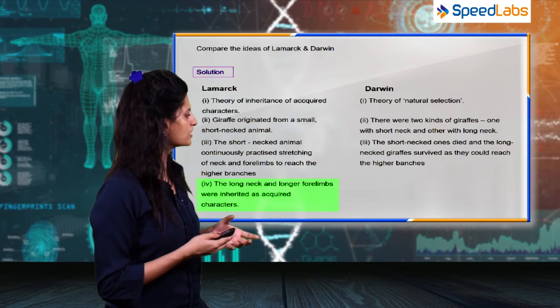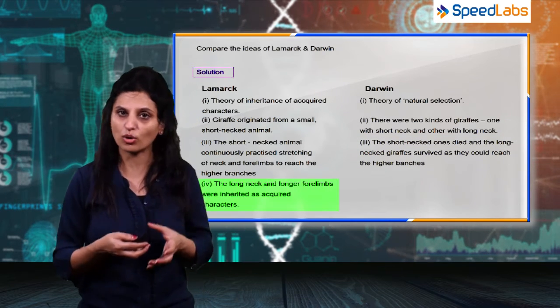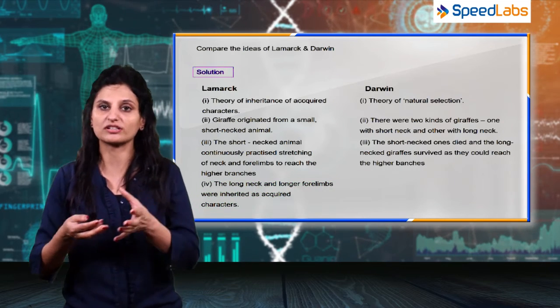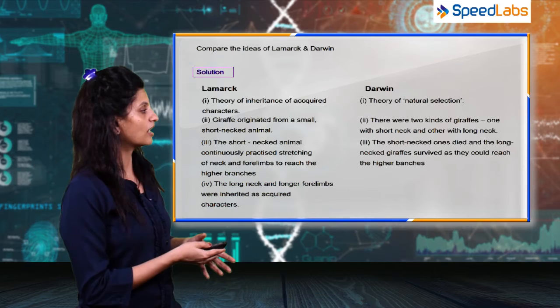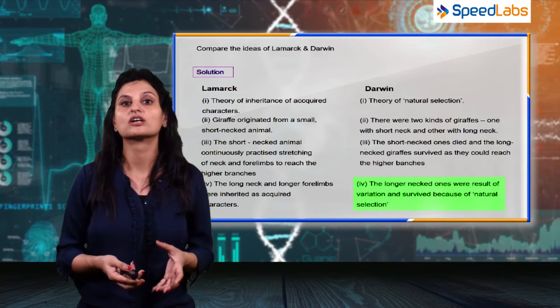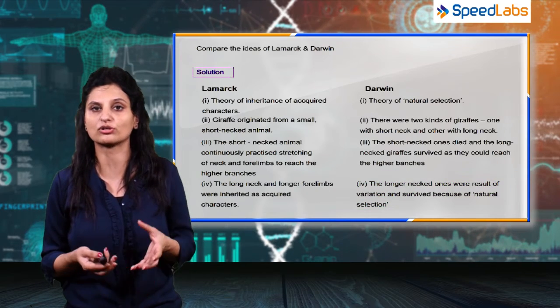Next, the long neck and the longer forelimbs were inherited as acquired characters. Lamarck said that this long neck was a character and it was acquired in the next generation. What Darwin had to say was that the long-necked ones were a result of variation and it was not an acquired character.